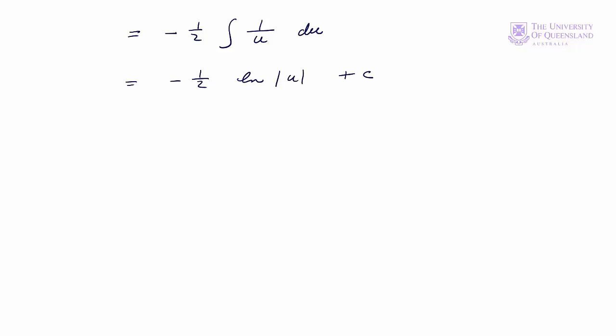Substituting back in for u, we get minus one-half times the log of the absolute value of 7 minus x squared, plus c.